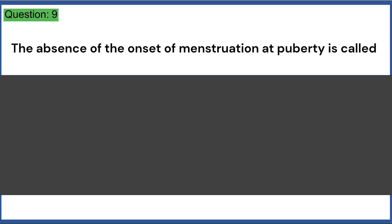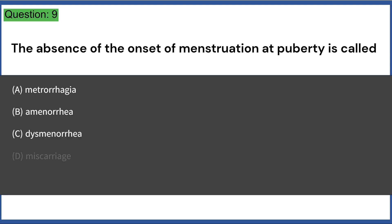The absence of the onset of menstruation at puberty is called: A. Metrorrhagia, B. Amenorrhea, C. Dysmenorrhea, D. Miscarriage, E. Eclampsia. Answer: B.